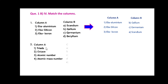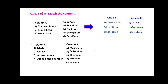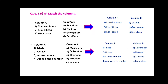Second: in column A there are given triads, octaves, atomic number, and atomic mass number. In column B different scientist names are given. The answer is: triads matches with Dobereiner, octaves with Newlands, and atomic number and atomic mass number relate with Mendeleev.